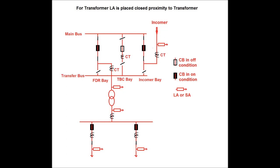For the transformer, LA is placed in close proximity to the transformer. The single line diagram shows the transformer with HV side and LV side, and also the LV side main bus. It may be a 33 kV substation where the transformer rating is 33 by 11 kV, or it may be a 132 by 33 kV substation where the transformer rating is 132 by 33 kV.